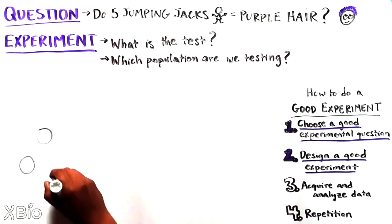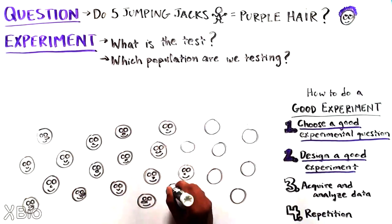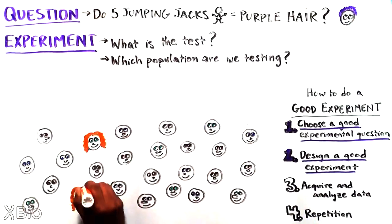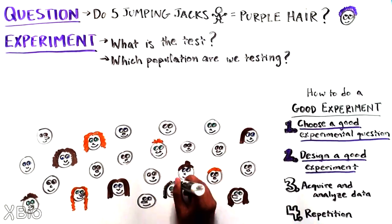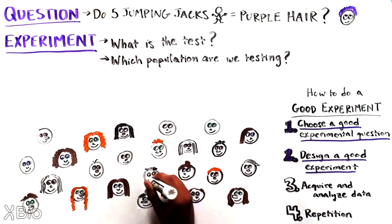We need to think about which population we're testing. It's often impossible to assess the whole population, for instance, every person in the world or every person with a specific feature you're interested in because it's too expensive and time-consuming. So instead, we assess a smaller sample.